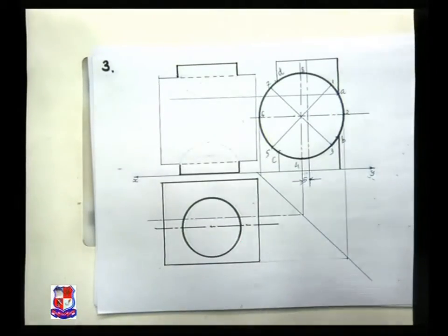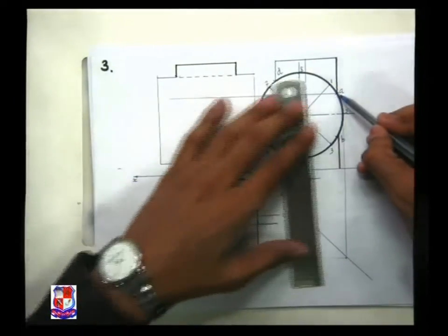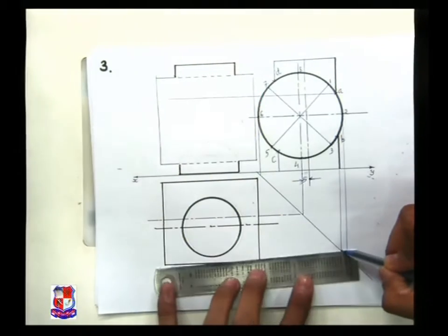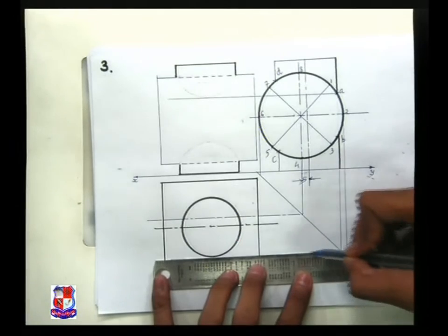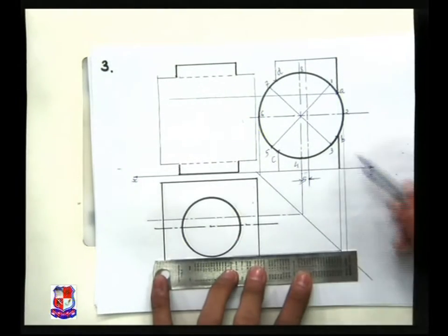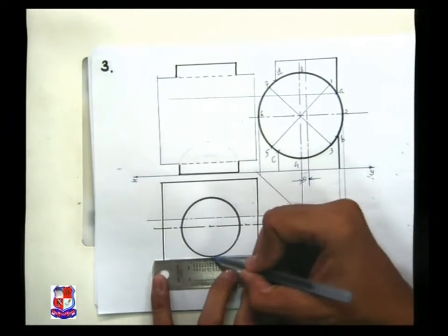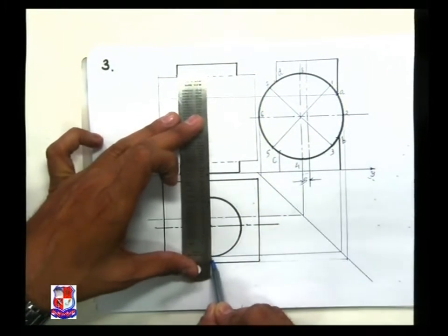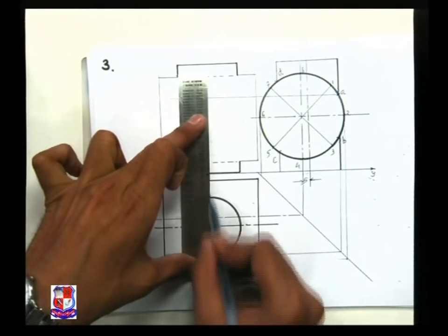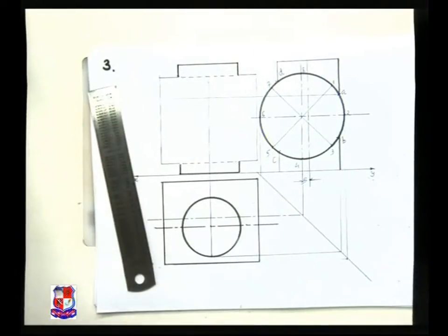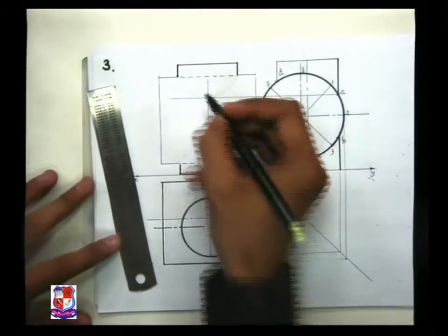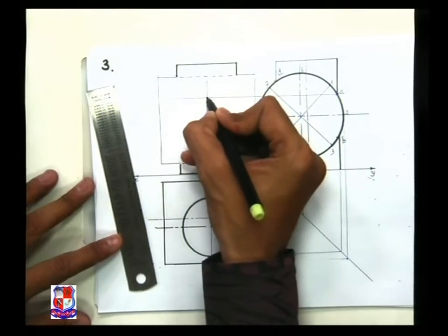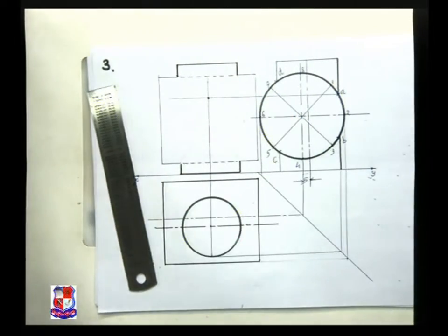To find where point A is located: from point A, draw a straight vertical line — that will cut the miter line somewhere here. From that, draw a straight horizontal line, which will cut the circle exactly here. From that point where it cuts the circle, draw a straight vertical line. So point A dash would be at the intersection of this vertical line and this horizontal line — here is point A dash.